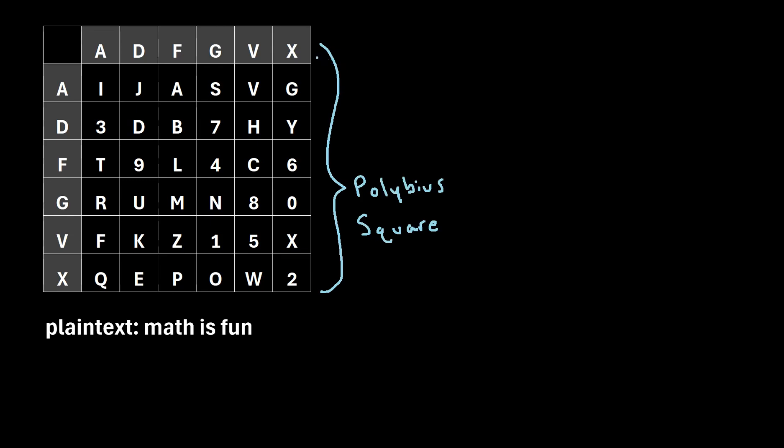This is a 6x6 square in which the column headers are ADF-GVX and the row headers are also ADF-GVX. Next, we have to fill this square with the letters of the alphabet A through Z, in which each letter only appears once, along with the digits 0 through 9.